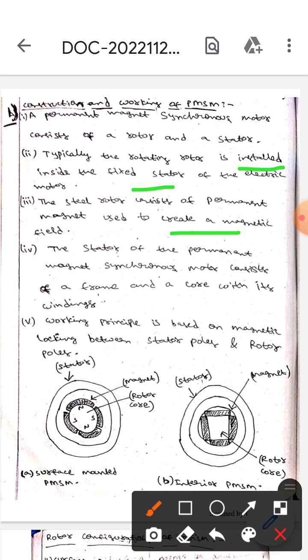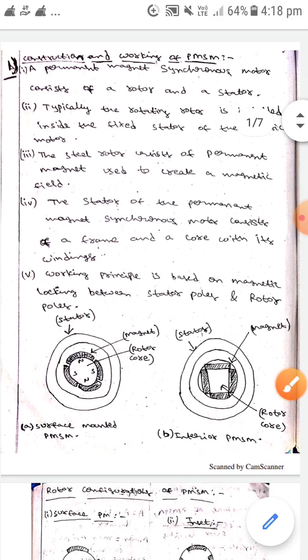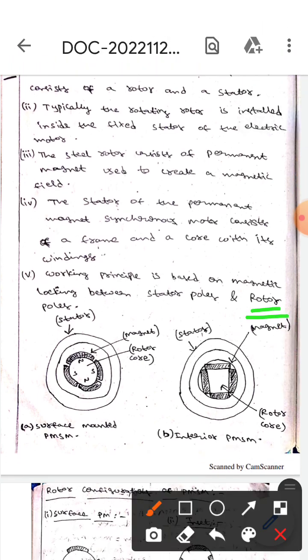The stator of the permanent magnet synchronous motor consists of a frame and a core with its windings. The occupancy principle is based on the magnet walking between stator poles and rotor poles.